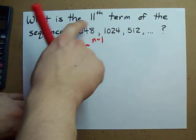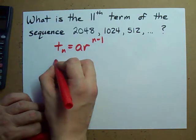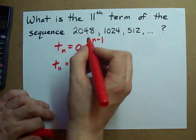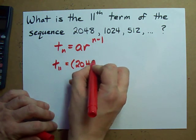I don't know the value of the eleventh term. That's what I'm asked to find. t_11 is what I will call that. My first term is 2048.